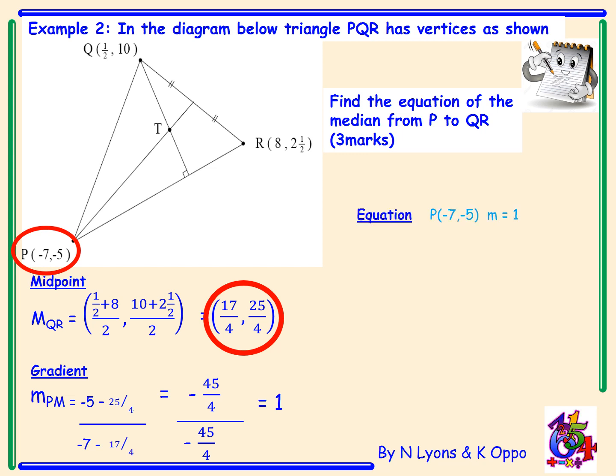So the gradient of our median is 1 and we're going to use the point P, which is (-7, -5). Y minus B equals M bracket X minus A. Y take away -5 equals 1 bracket X take away -7.